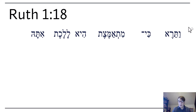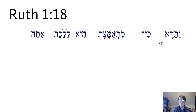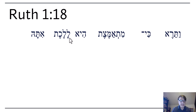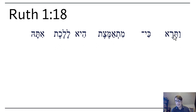See if you can pronounce this Hebrew. Here's how I would pronounce it: va-te-re, probably va-te-re, I'm guessing, ki-mit-am-mez-it-hi-la-leket-it-ah. Okay, what do we recognize here? Va-vav-patak-doubling — that's converted and perfect, a preterite, past tense.